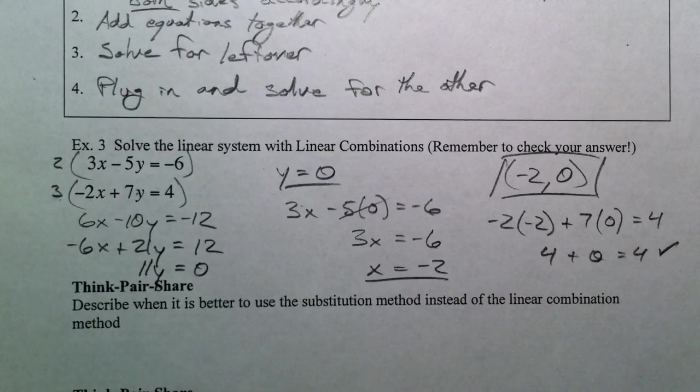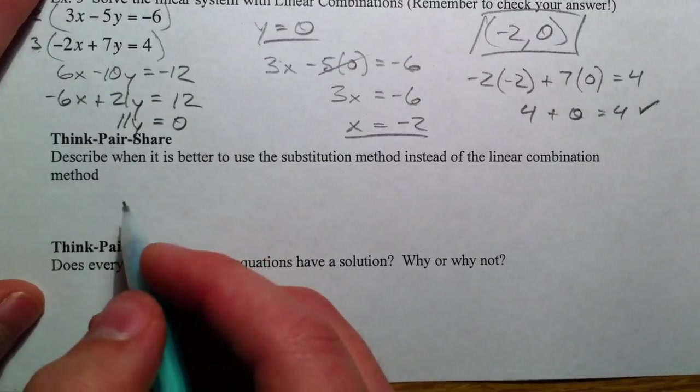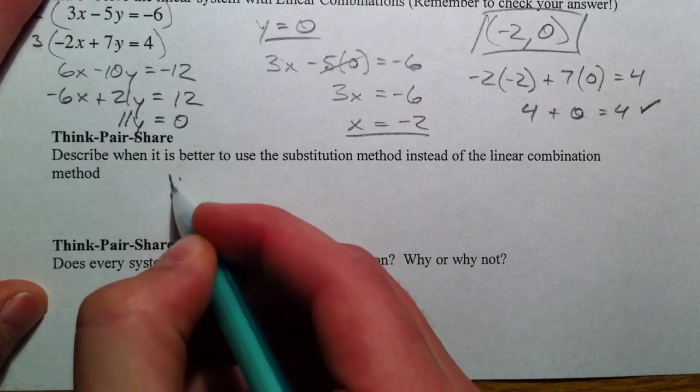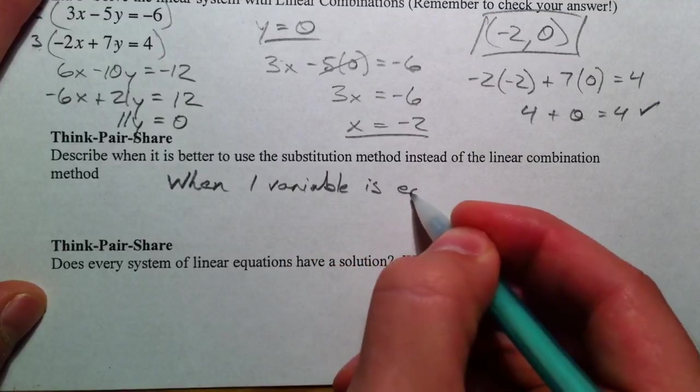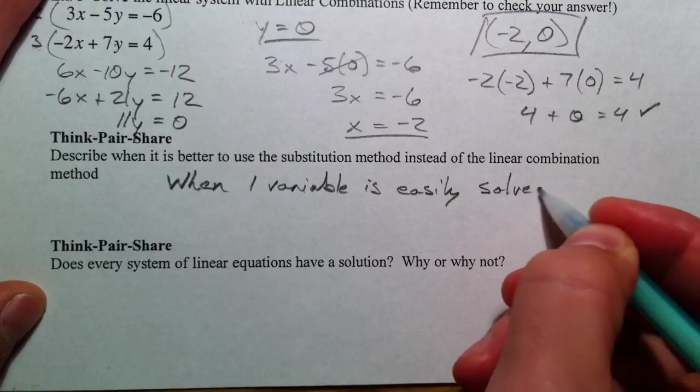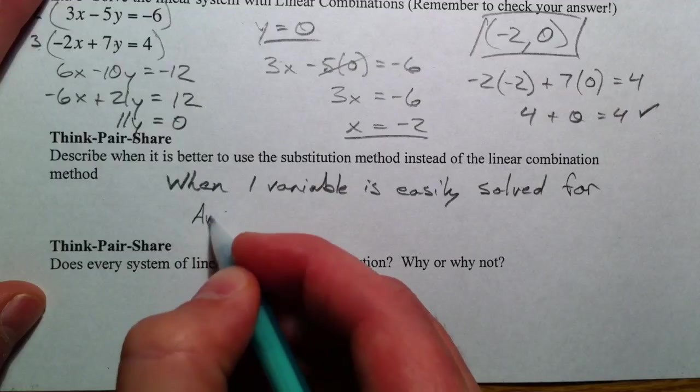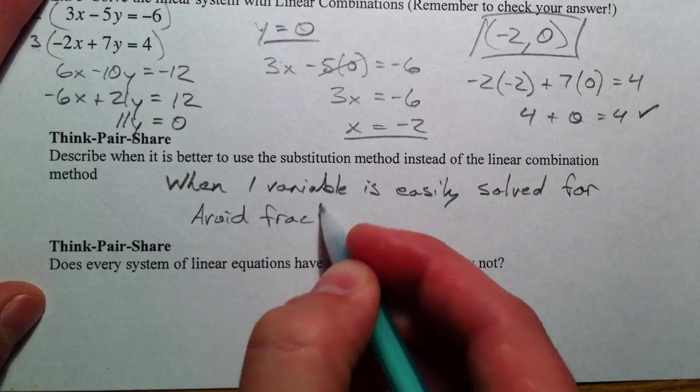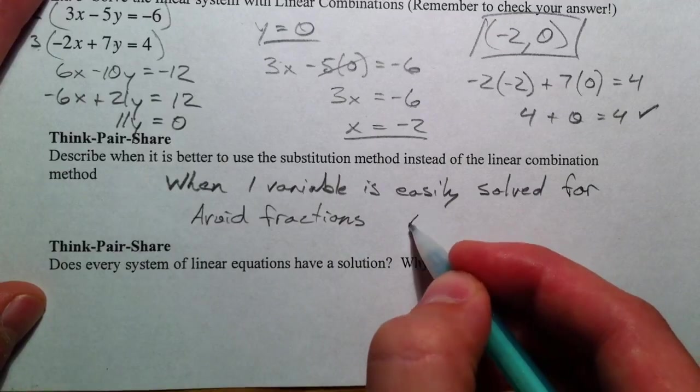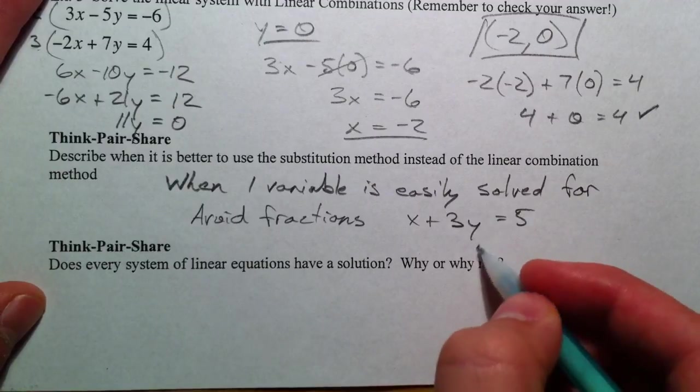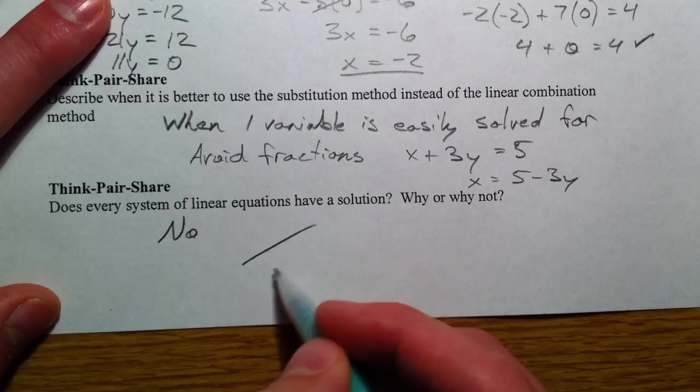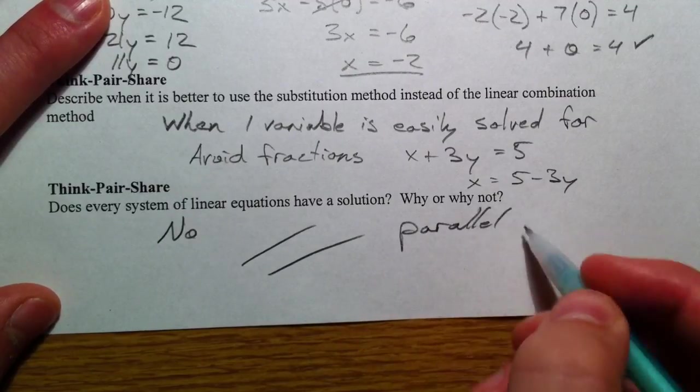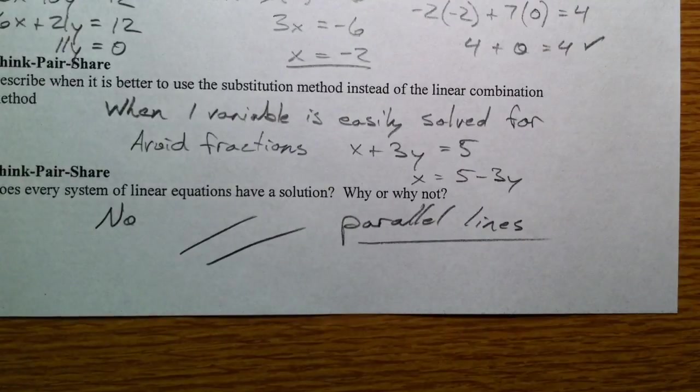So, describe when it's better to use substitution instead of linear combinations. Really, it's quite easy. All of the ones that we did before, when one variable is easily solved for. In other words, avoid fractions at all costs. For example, if you had x plus 3y equals 5, you could easily get that into 5 minus 3y equals x. Does every system have a solution? Well, no. Because you might have parallel lines. Keep that in mind. All of these have had answers up until now. I wanted to remind you of the other possibilities we have.